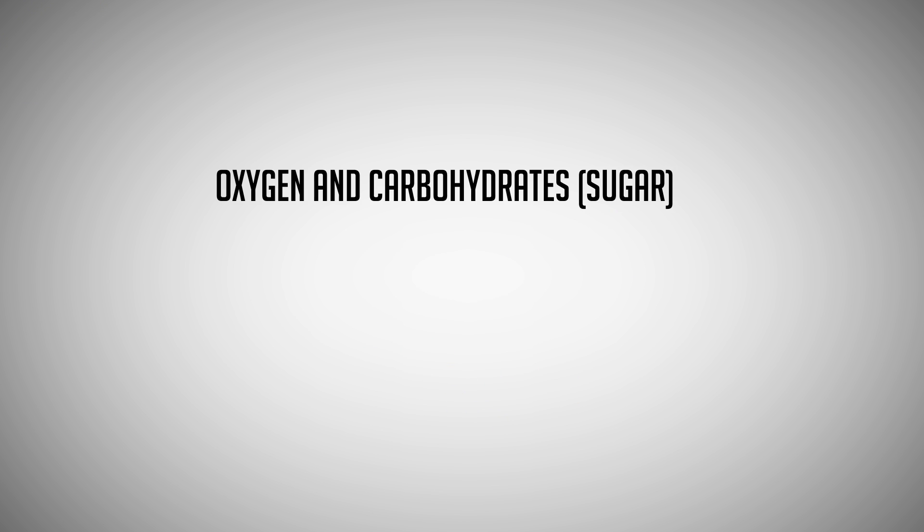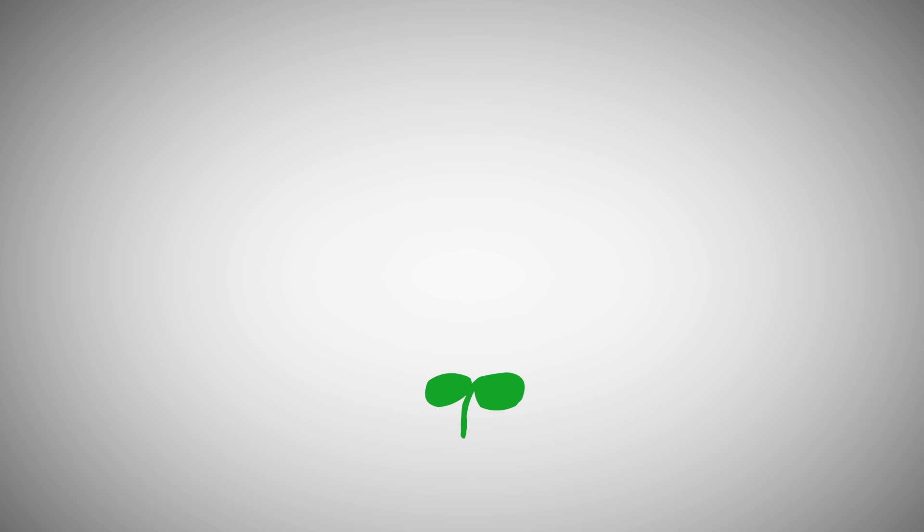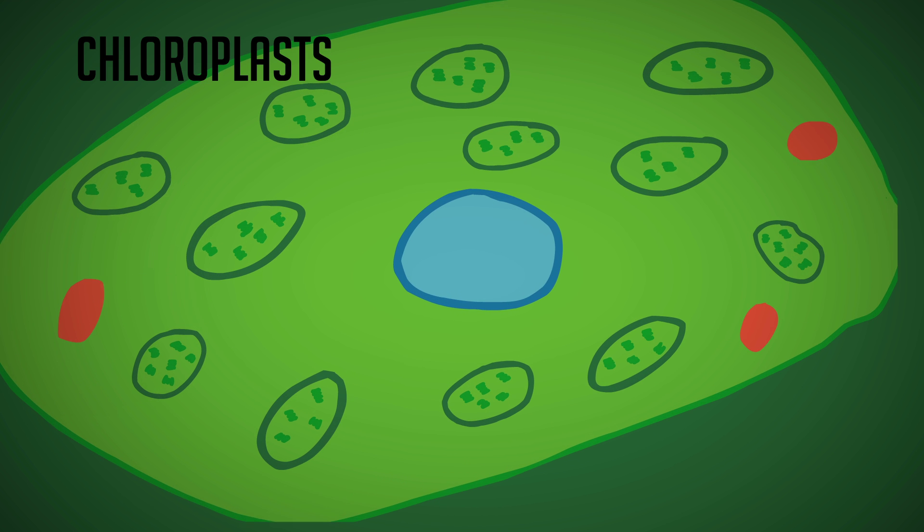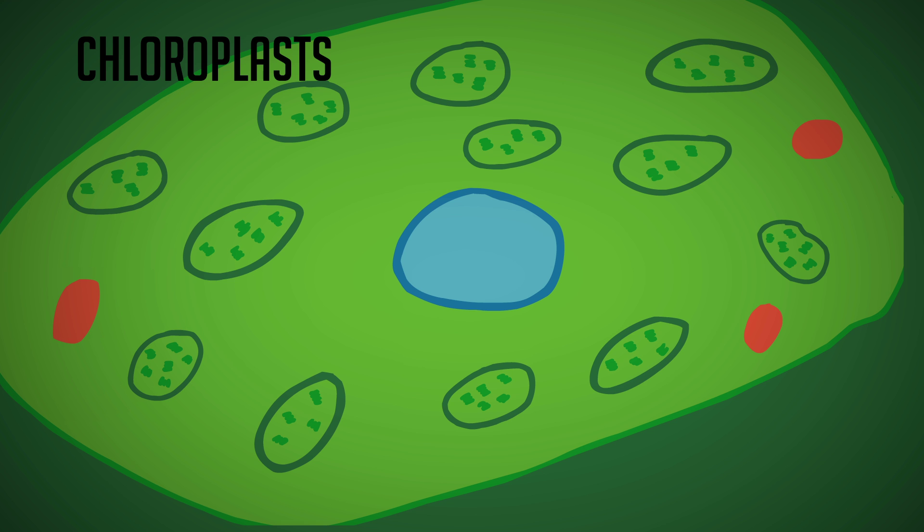Living creatures need carbohydrates to fuel our bodies and oxygen to breathe. Photosynthesis happens inside the chloroplasts, the small structures that give plants their green color. There are about 10 to 20 of these in every plant cell.